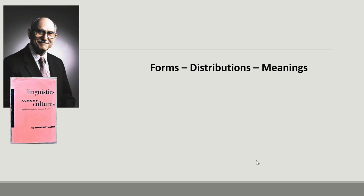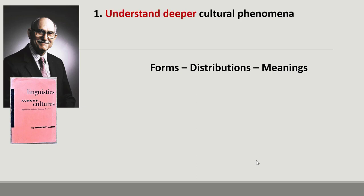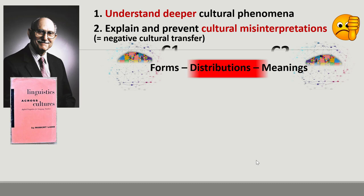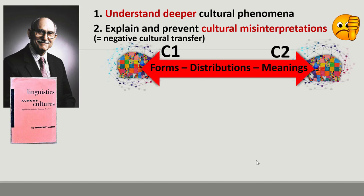The three-dimensional method based on form, meaning, and distribution analysis suggested by Lado provides tools to explore deeper cultural behaviors and products by going from their surface aspects into deep value-related aspects. The proposed method also makes it possible to explain and predict cultural misinterpretations due to negative cultural transfer, if one compares a cultural phenomenon of one culture to the similar phenomenon of another culture, always taking into account their forms, meanings, and distributions.